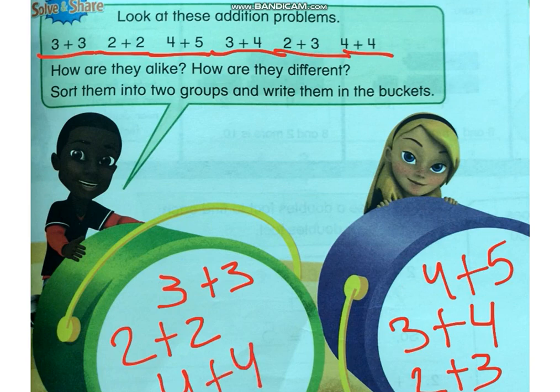Remember: 3 and 3 is 6, 2 and 2 is 4, and 4 and 4 is 8. We need to keep practicing our doubles like we did in school. 1 and 1 is 2, 2 and 2 is 4, 3 and 3 is 6, 4 and 4 is 8, 5 and 5 is 10, 6 and 6 is 12, 7 and 7 is 14, 8 and 8 is 16, 9 and 9 is 18, and 10 and 10 is 20.